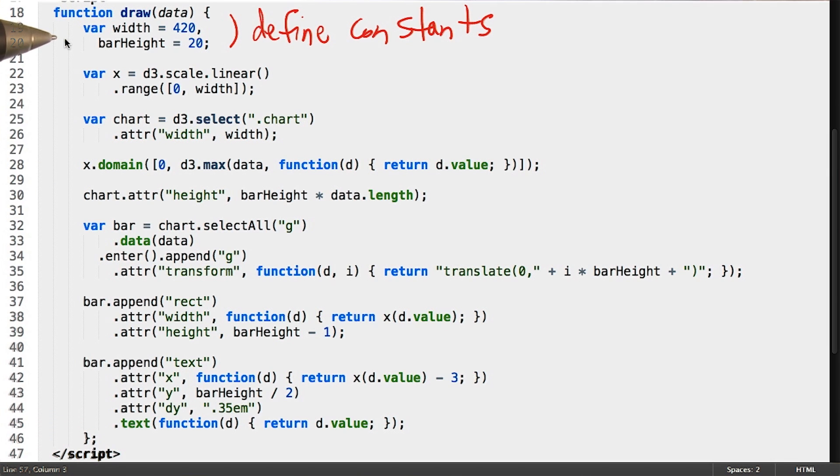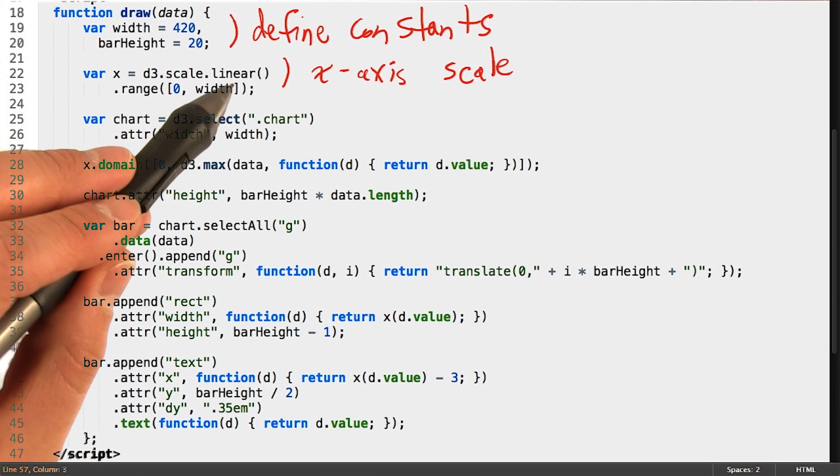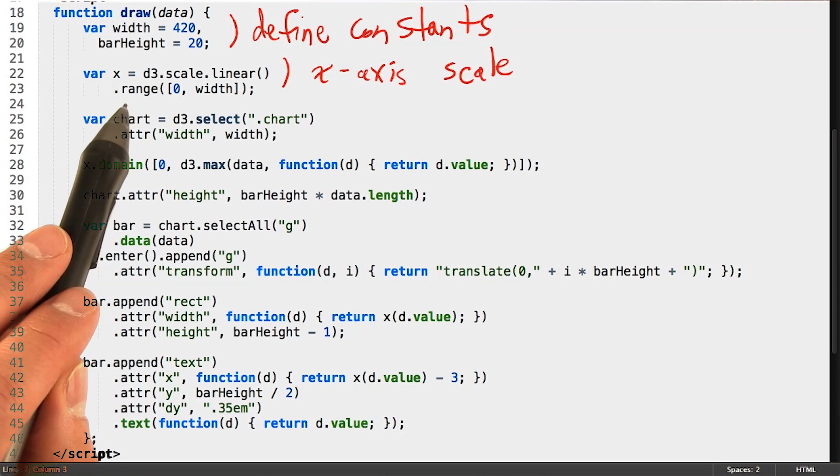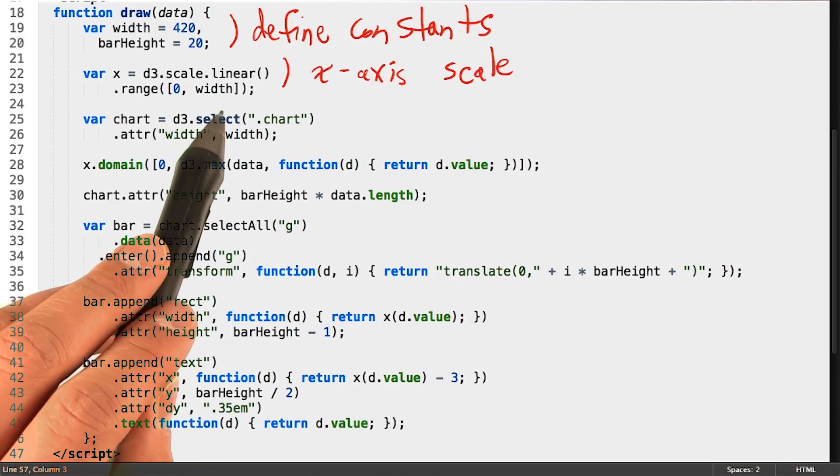The first two lines define the width for the chart and the height for the bars. The second chunk of code here creates a linear scale and sets the range to be zero to the width of our chart.